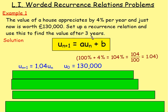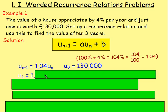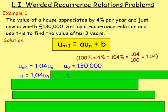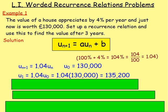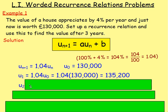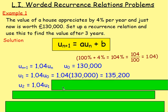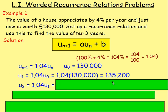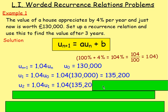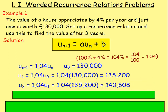Now we can work out the value after three years. After u0, we have u1: it's 1.04 times the previous value, so 1.04 times u0, which is 1.04 times 130,000 — that gives you the value after one year. For u2, again it's 1.04 times the previous amount, so 1.04 times u1. Substituting in the values, you've got 1.04 times 135,200, giving you the value after two years.